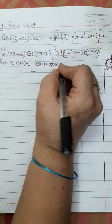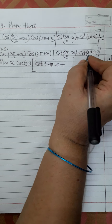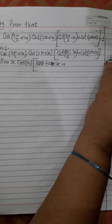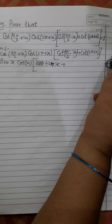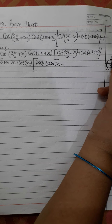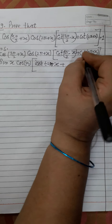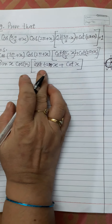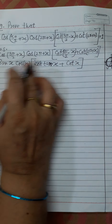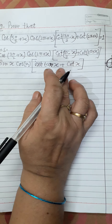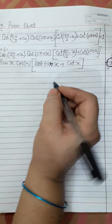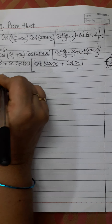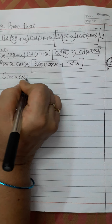For cot(2π + x): 2π + x is in the first quadrant. Since it is an even multiple of π, cot stays cot and is positive, so cot(2π + x) = cot x. Now the left-hand side becomes: sin x · cos x · [tan x + cot x].